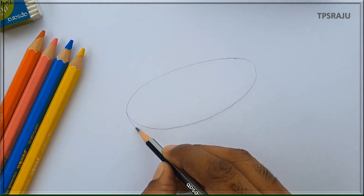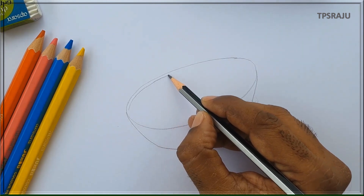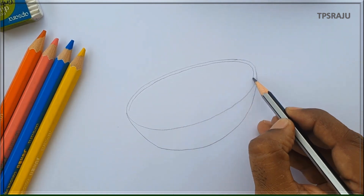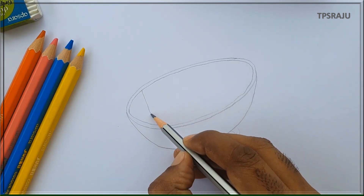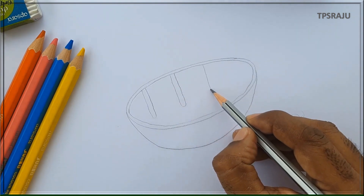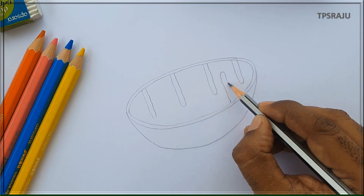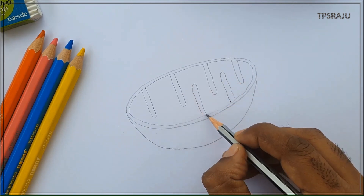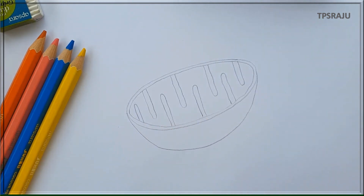These are in oval or cylindrical shape, surrounded by two layers: outer membrane and inner membrane. The inner membrane has several folds called cristae. The remaining space is filled with a fluid called matrix.